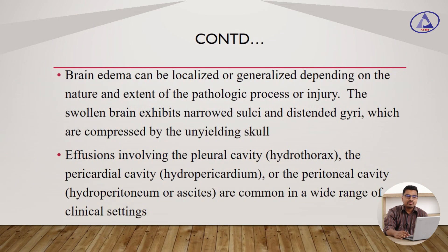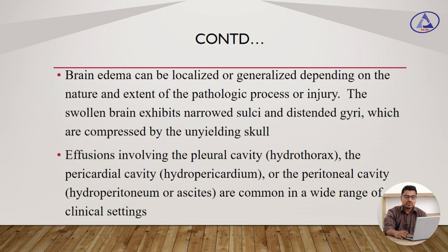Brain edema can be localized or generalized depending on the nature and extent of the pathologic process or injury. The swollen brain exhibits narrowed sulci and distended gyri, which are compressed by the unyielding scalp. Effusions involving the pleural cavity (hydrothorax), the pericardial cavity (hydropericardium), or the peritoneal cavity (hydroperitoneum or ascites) are common in a wide range of clinical settings.